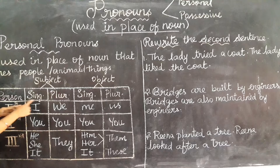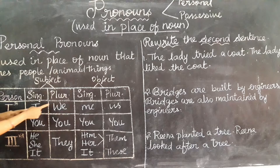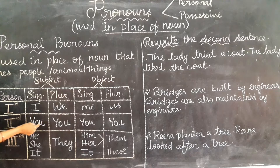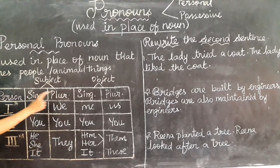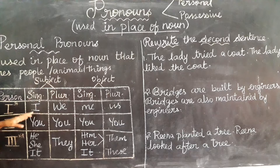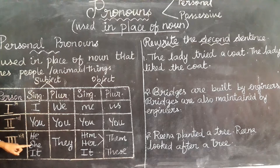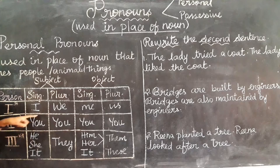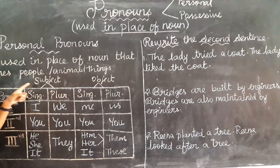Let's learn what the personal pronouns are. They are: I, we, me, us, you, you, he, she, it, they, him, her, it, them, this. These are all personal pronouns.